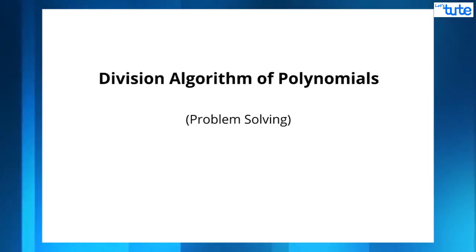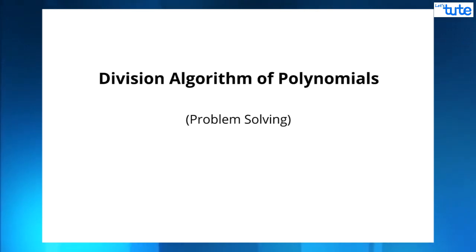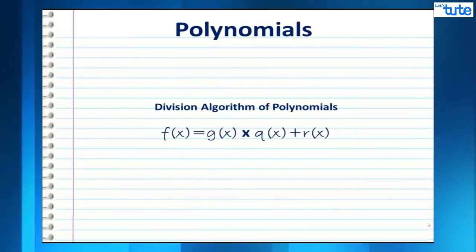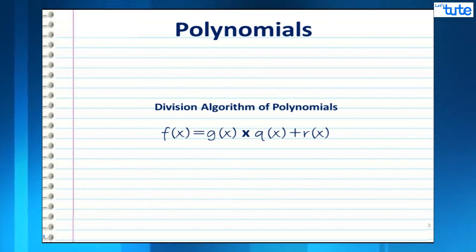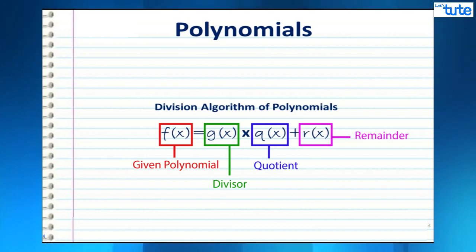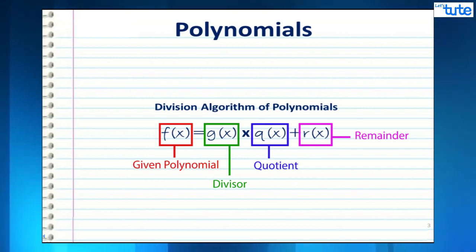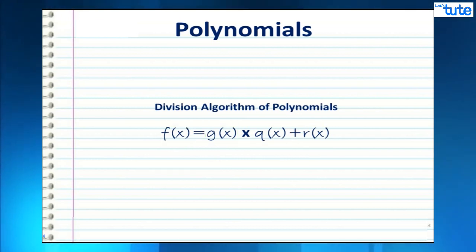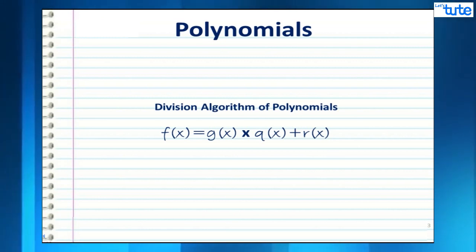In this video we will solve three types of problems based on the division algorithm of polynomials. The division algorithm says f(x) = g(x)·q(x) + r(x), where f(x) is the given polynomial, g(x) is the divisor, q(x) is the quotient, and r(x) is the remainder — just like the division algorithm of integers: dividend = divisor × quotient + remainder.